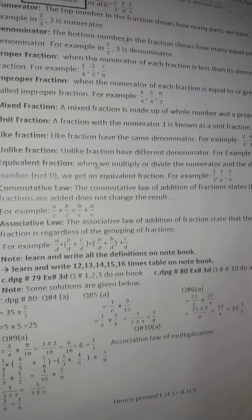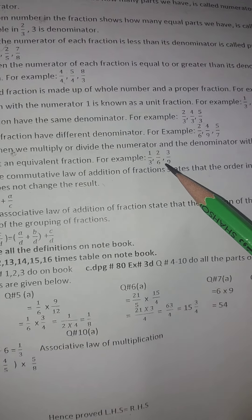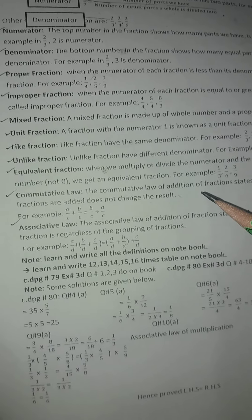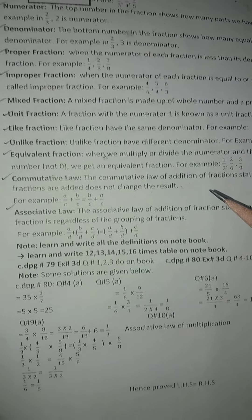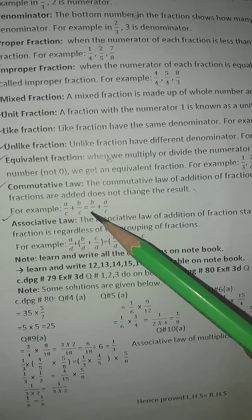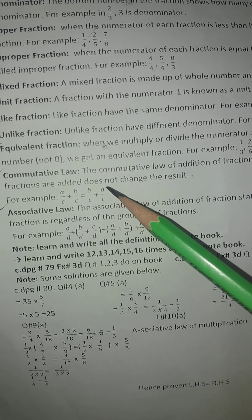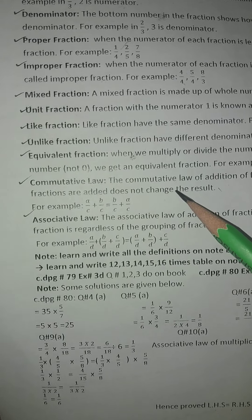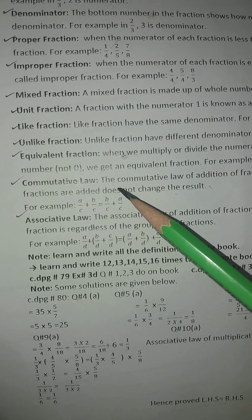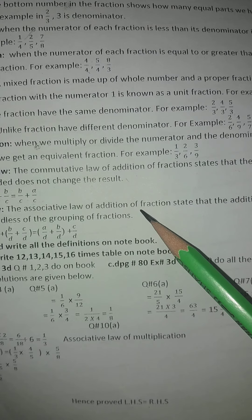Commutative law: the commutative law of addition of fractions states that the order in which fractions are added does not change the result. For example, a over c plus b over c is equal to b over c plus a over c. When we change the order, the result does not change — this is called the commutative law.